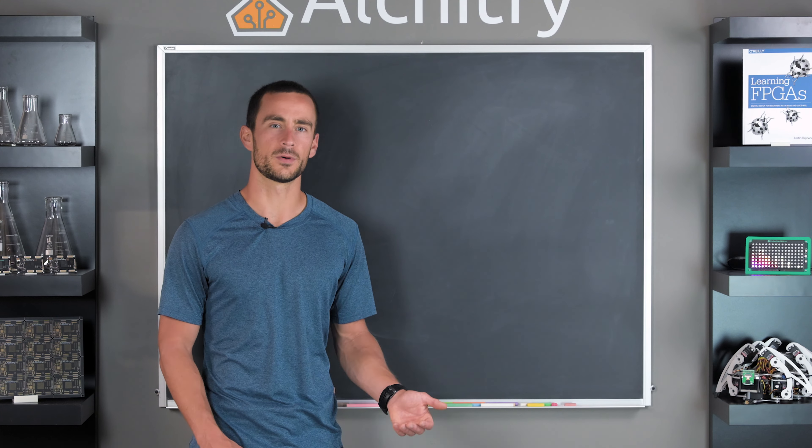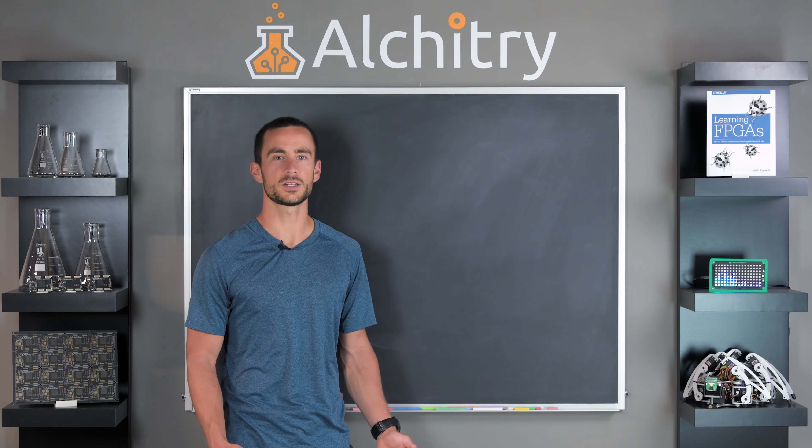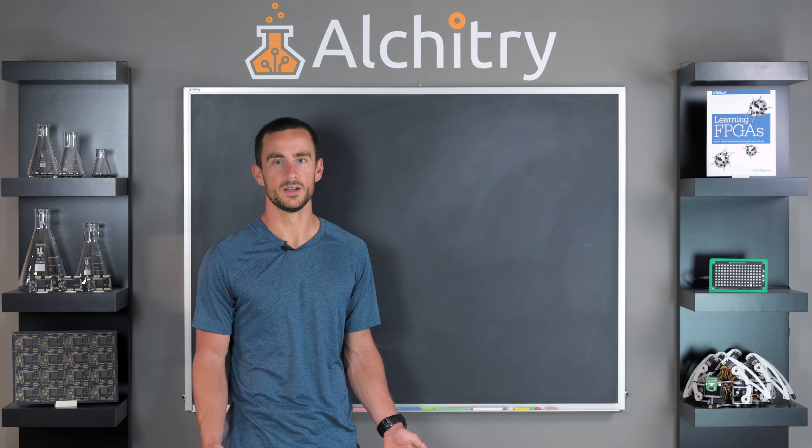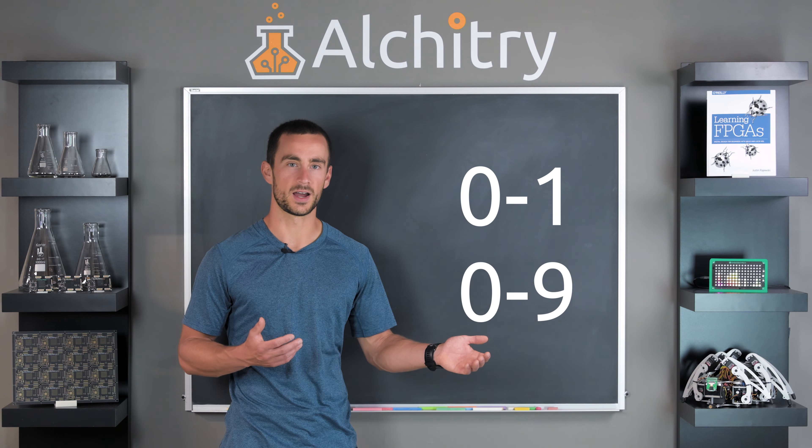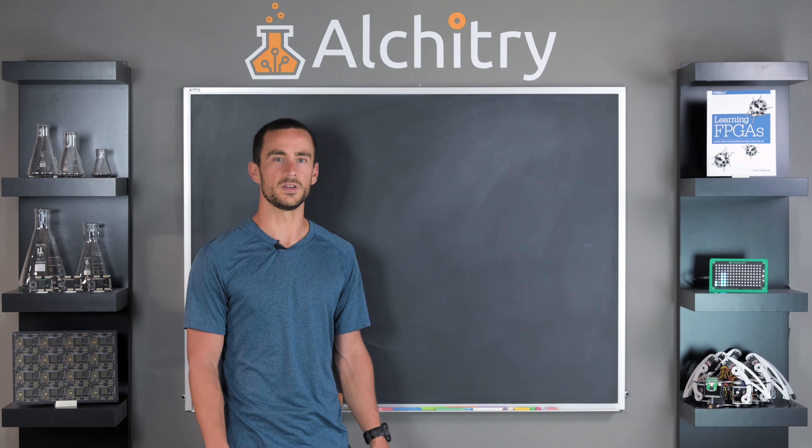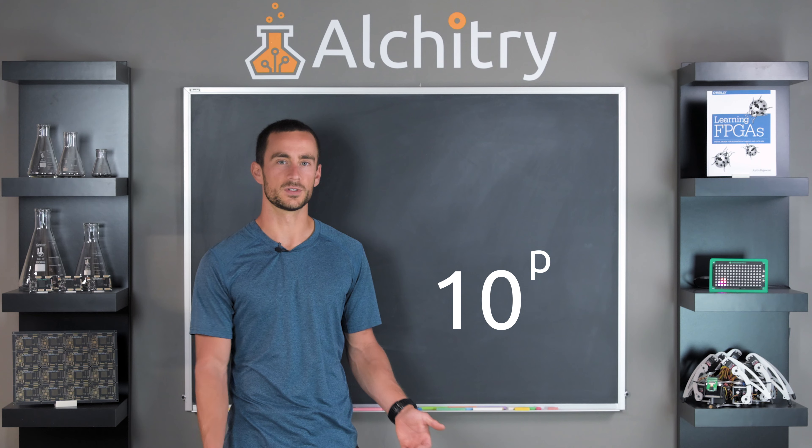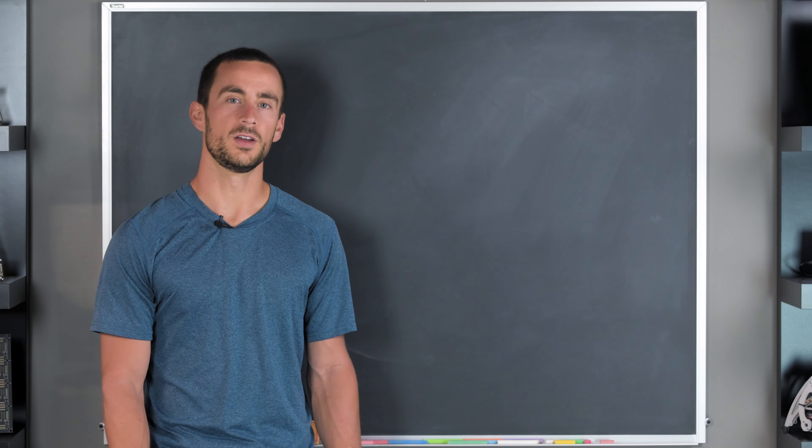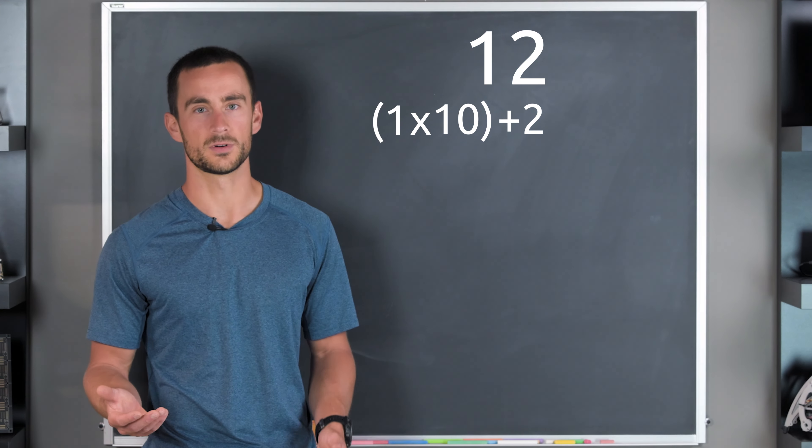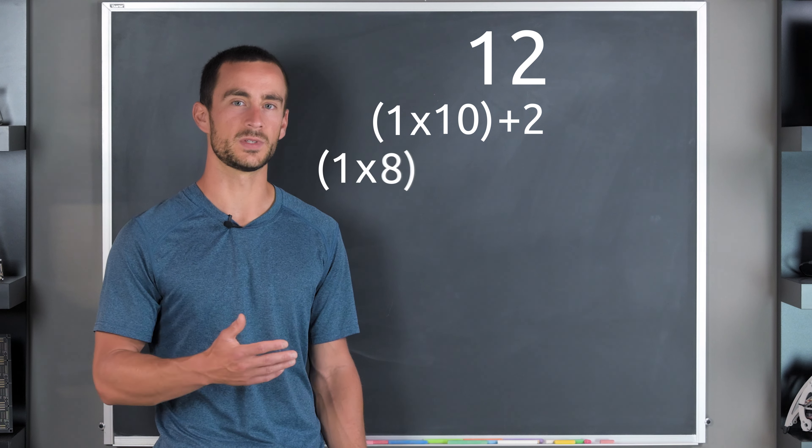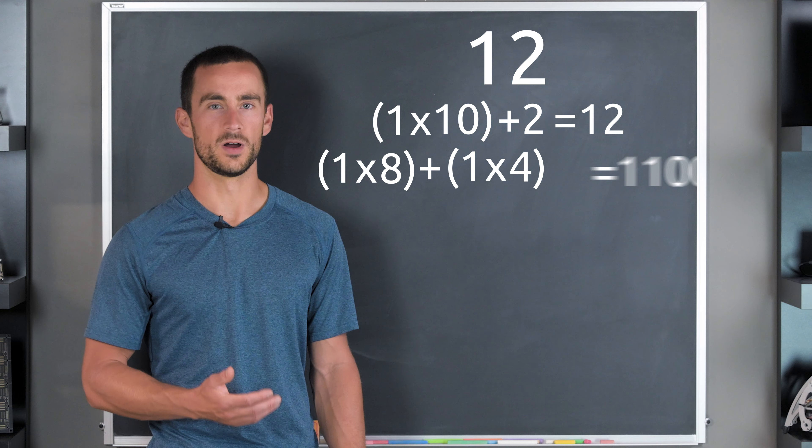However, if we want to represent numbers, the standard binary representation is by far the simplest way. The binary number system is essentially the same as the decimal number system that you're used to, except that each digit can only be 0 or 1 instead of 0 through 9. In a decimal number system, the value of each digit is scaled by 10 to the power of its position. In binary, each value is scaled by 2 to the power of its position. For example, if we wanted to represent 12 in decimal, we would need 1 times 10 plus 2. In binary, we would need 1 times 8 plus 1 times 4. In other words, 12 is 1100.